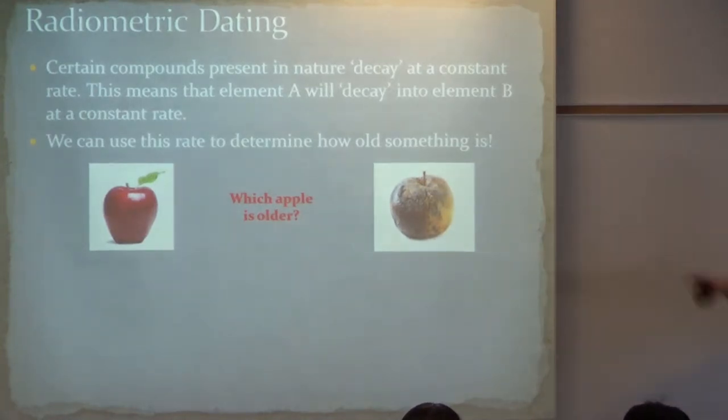They change from one element into another. This means that element A will change into element B at a constant rate. Set amount of time, this much of the compound will decay into a new compound. And there's various methods by, pathways by which it can decay that we won't necessarily get into right now. So we use this to determine how old something is. Looking at the surface on these two pictures, which one do you think is older? The one on the left or the one on the right?